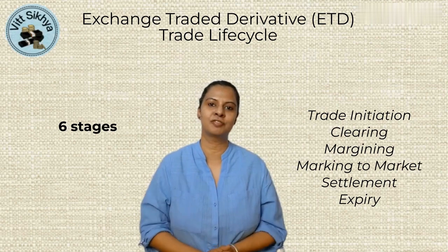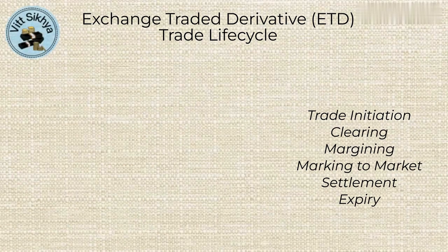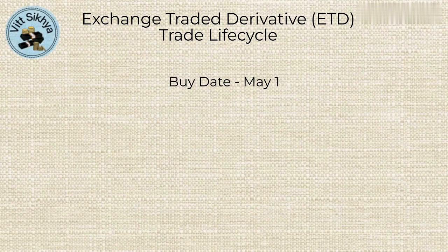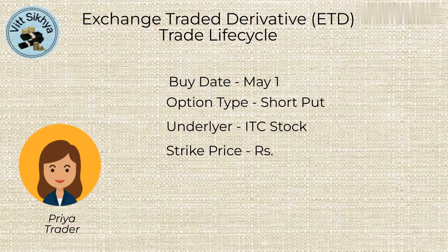Let's go through each of these stages of the life cycle using an example. Suppose on May 1st, a trader named Priya wants to sell a short-put option on a stock ITC with a strike price of Rs. 420 and an expiration date of one month from now on May 25th.